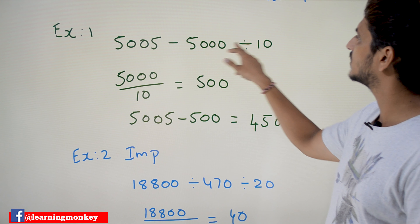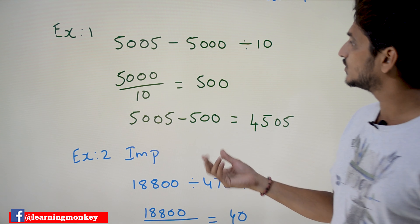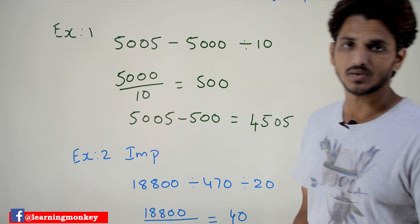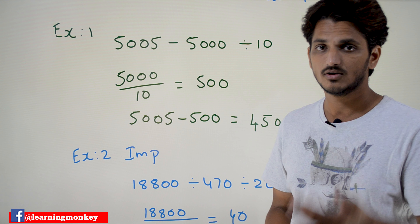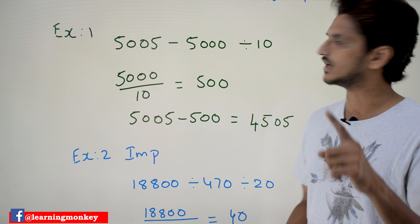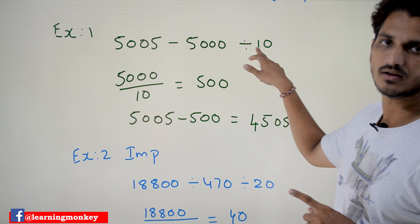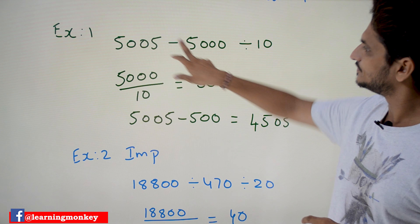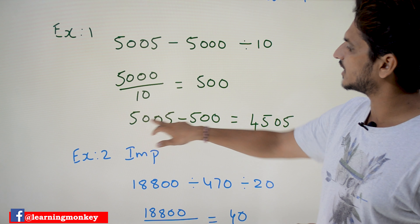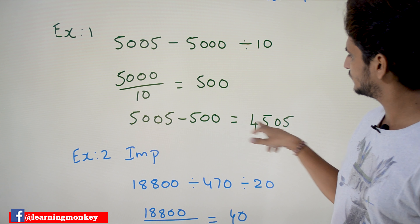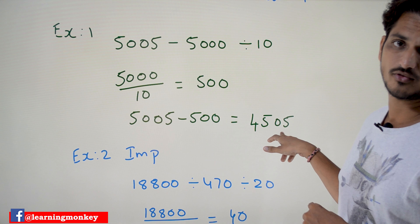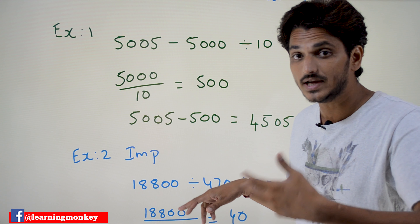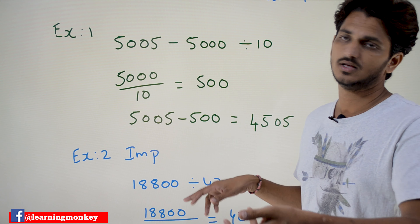Example one: 5005 minus 5000 divided by 10. Here we have a minus symbol and a division symbol. Which do we apply first? Division. So 5000 divided by 10 gives 500. Now the expression becomes 5005 minus 500, which equals 4505. That is the order: division first, then subtraction.